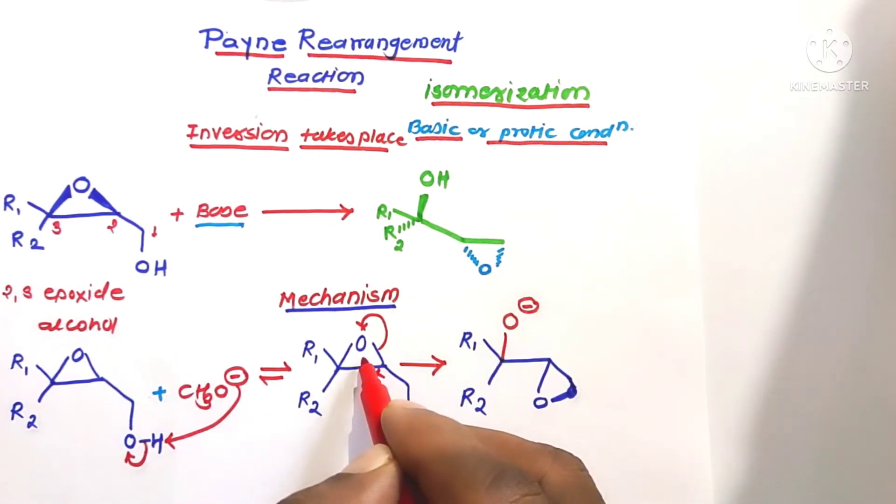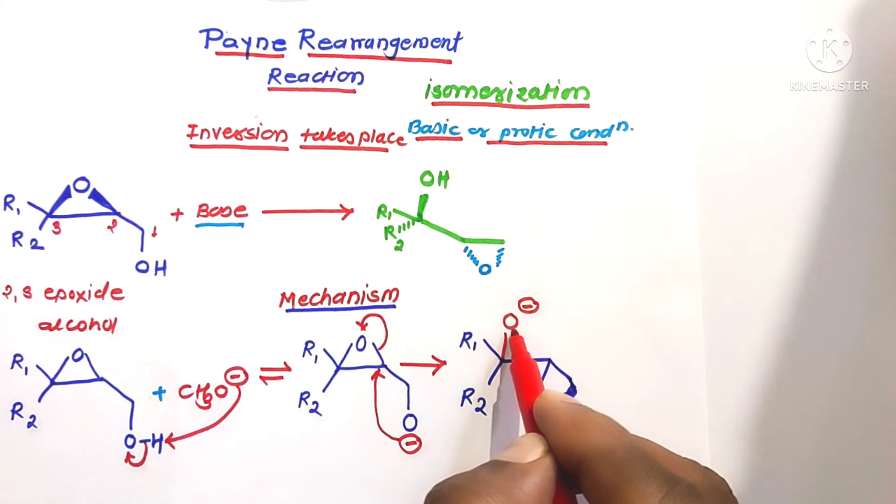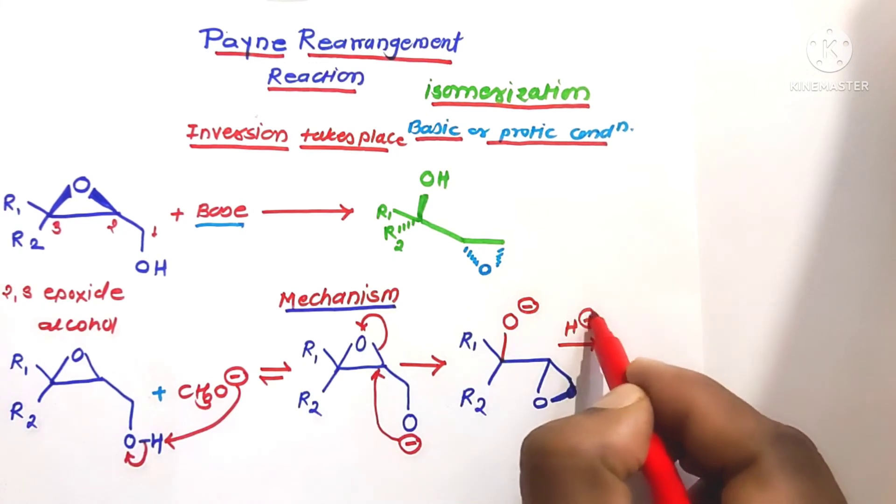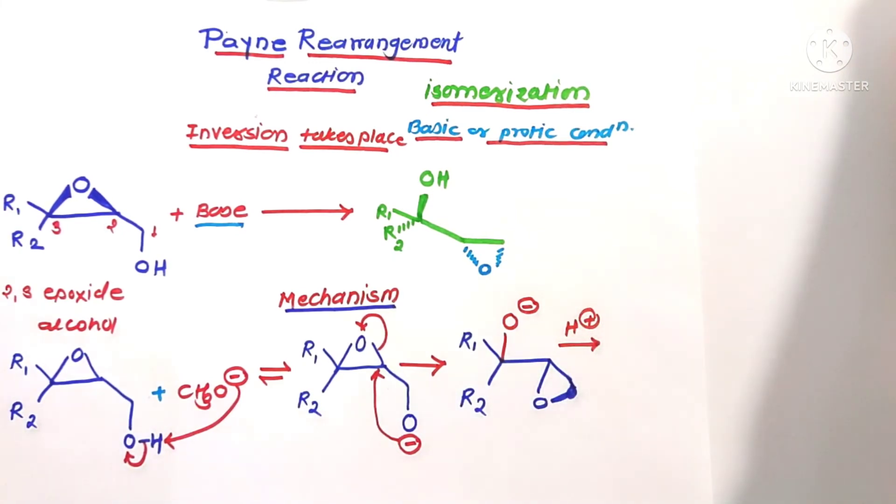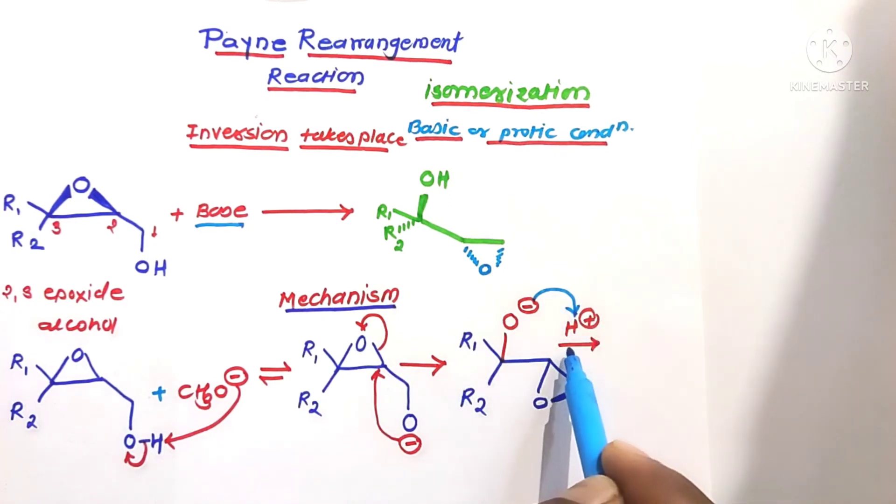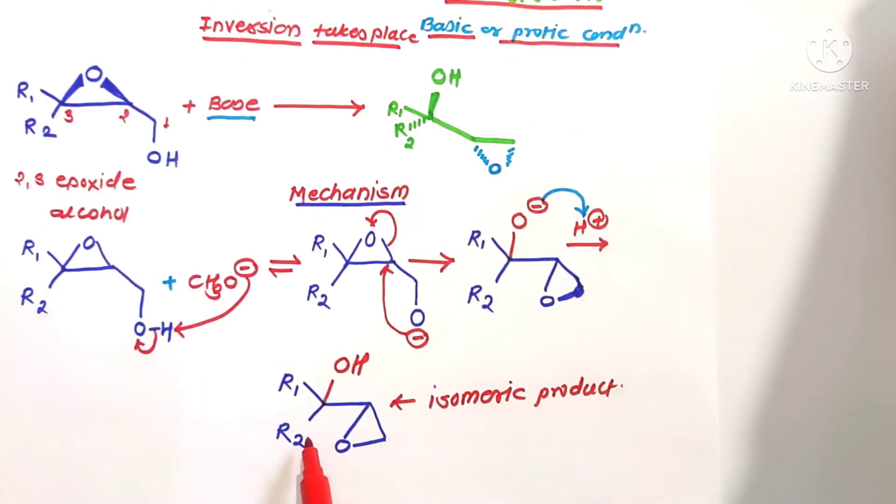Epoxide ring opening takes place to form O minus ions. Now this molecule is acidified, that is addition of H plus ions. This oxygen containing non-bonded pair of electrons abstracts the electron-deficient H plus ions to form the final product of this reaction - the isomeric inverted product.